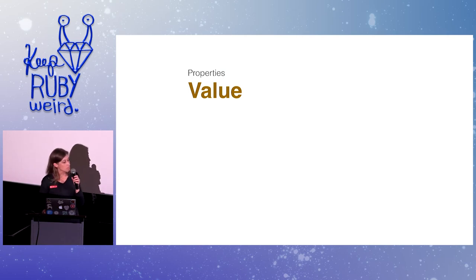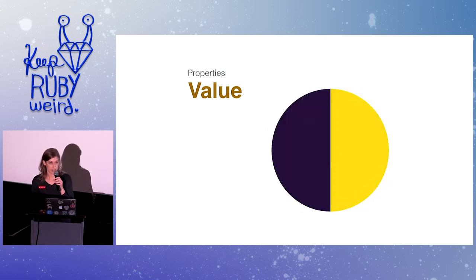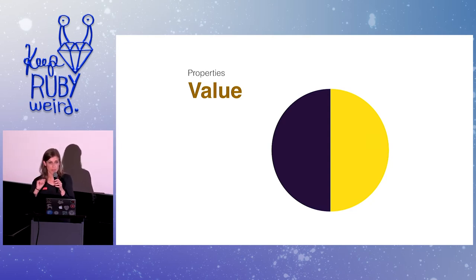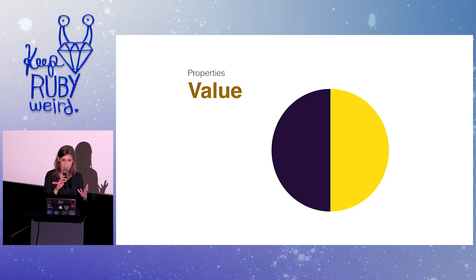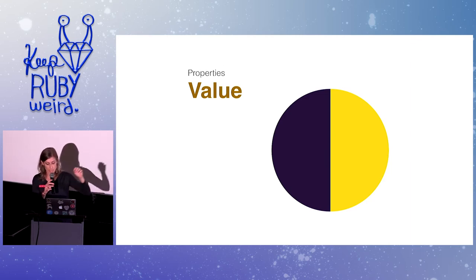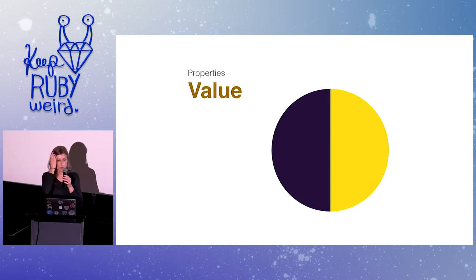Then we have value. Value is used to describe how light or dark a color is — it has to do with how much light is being reflected back into your eye. In this example, purple has a low value because it is absorbing more light, and yellow has a high value because it reflects more light. So hue defines the purity of a color, and value describes the light or darkness of a color.